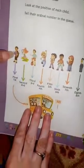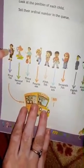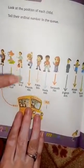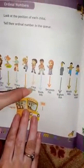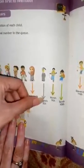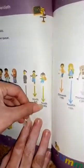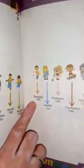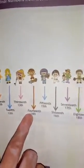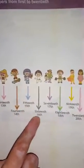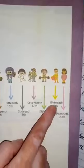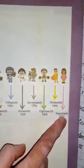Now look, the boy standing here is first, now second, third, fourth, fifth, sixth, seventh, eighth, ninth, tenth, eleventh, twelfth, thirteenth, fourteenth, fifteenth, sixteenth, seventeenth, eighteenth, nineteenth, and twentieth.